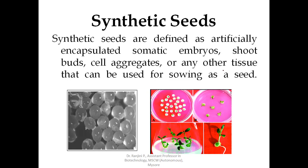We know the difference between somatic embryo and zygotic embryo. Zygotic embryo will have the natural nutrient supplement, whereas somatic embryos lack this endosperm. So to replace the endosperm, the somatic embryos will be supplemented with alginate that will give nutrients for the growing embryo. This alginate also contains some fungicide to prevent contamination or infection. So these artificially prepared seeds — the somatic embryos — are called as synthetic seeds.